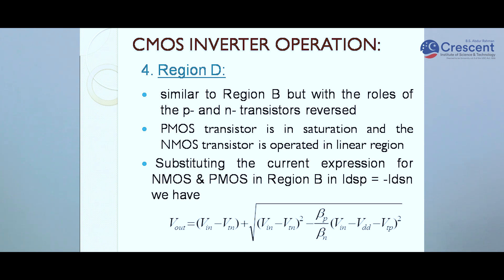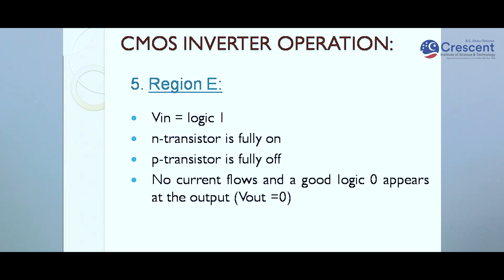Region D is similar to region B, but with the roles of P and N transistors reversed. The P transistor operates in the saturated region and the N transistor operates in the linear region. By substituting the current expressions for both PMOS in saturation and NMOS in the linear region, we obtain the output voltage VOUT as shown in the slide.